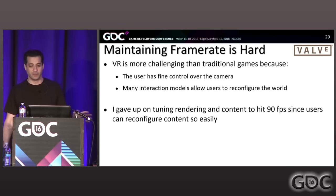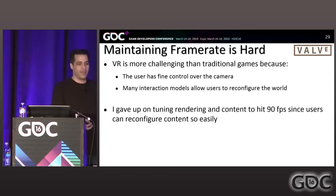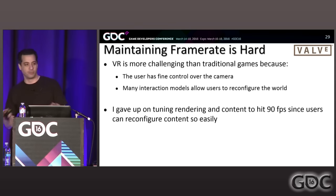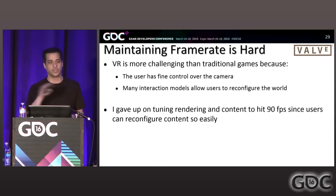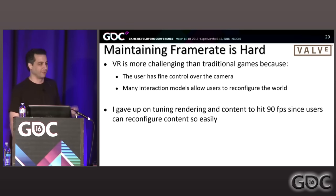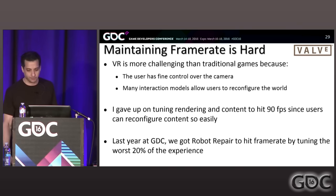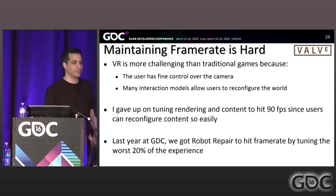I personally gave up on trying to tune a renderer and content to hit 90 Hz. Last year before GDC, I spent a ton of time tuning the worst 20% of Aperture Robot Repair to hit frame rate on a 980 — a standard approach where you target the worst case scenario. The problem was that barely hitting frame rate on a 980 means a lower GPU can't maintain it. That worst 20% really drives all our decisions. I wanted to think about this differently.